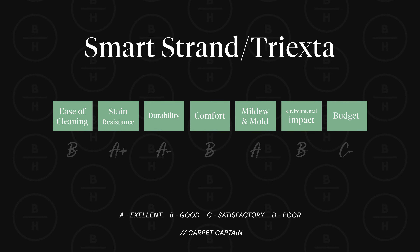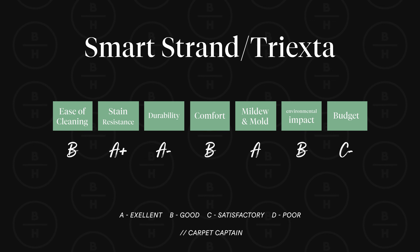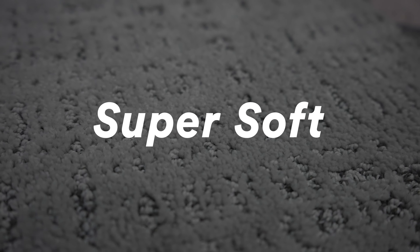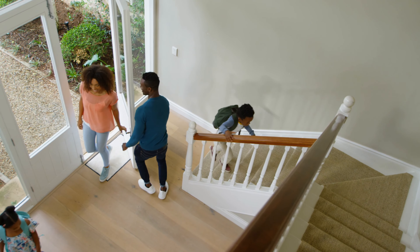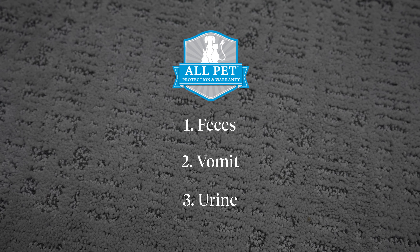Now let's talk about the new kid on the block: SmartStrand, or Tri-Exta. SmartStrand is not a nylon and not a polyester — it's in its own category. If being green is important to you, it's made from recycled products. The qualities are similar to polyester — it's solution-dyed — but one of its greatest qualities is that it's super soft, one of the softest fibers out there. It resists matting down over time and performs well on stairs, hallways, and high traffic areas. Mohawk, who makes SmartStrand, will warranty this fiber to resist all pet stains — feces, vomit, and urine — which is important for pet lovers.